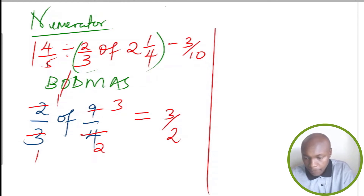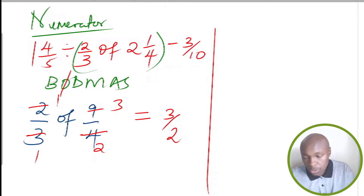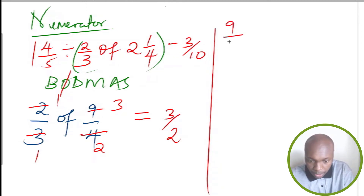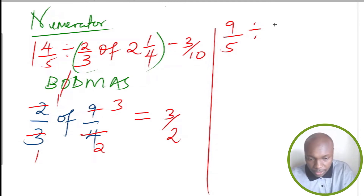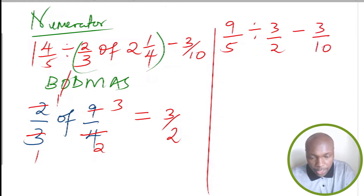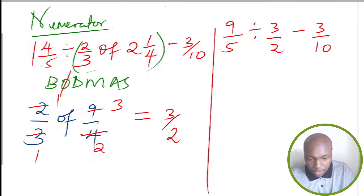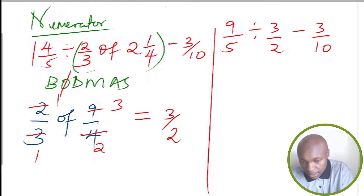Now we have 1 and 4 over 5. Converting 1 and 4 over 5 to an improper fraction gives 9 over 5. This is divided by whatever is now in the bracket — we already evaluated that and got 3 over 2 — then subtract 3 over 10. We are left with two operations: division and subtraction, so division should come first.